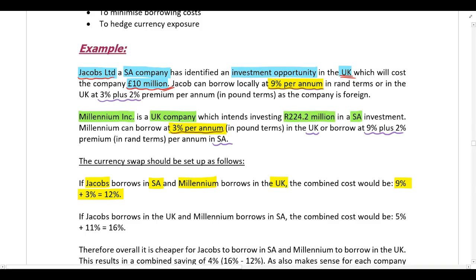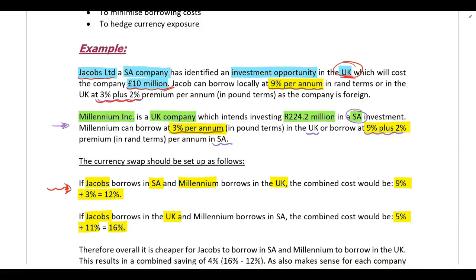Jacobs is trying to invest in the UK. If they borrow in the UK, they are going to pay interest at 3% plus 2%, so a rate of 5%. Millennium is looking at investing in South Africa. If they borrow in South Africa, they pay 9% plus a premium of 2%, so 11%. Combined, we get a total interest cost of 16%. It is therefore cheaper for both companies to borrow in their home country.